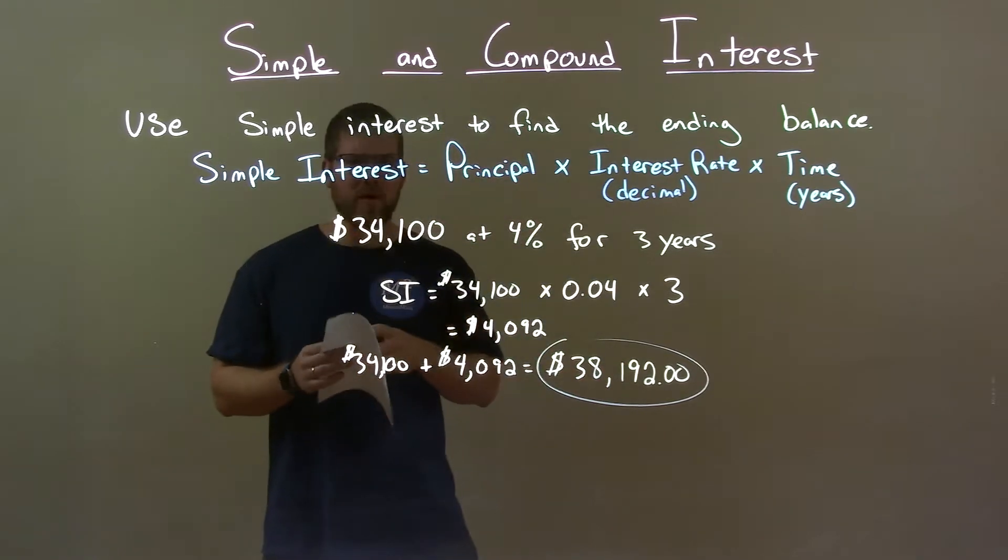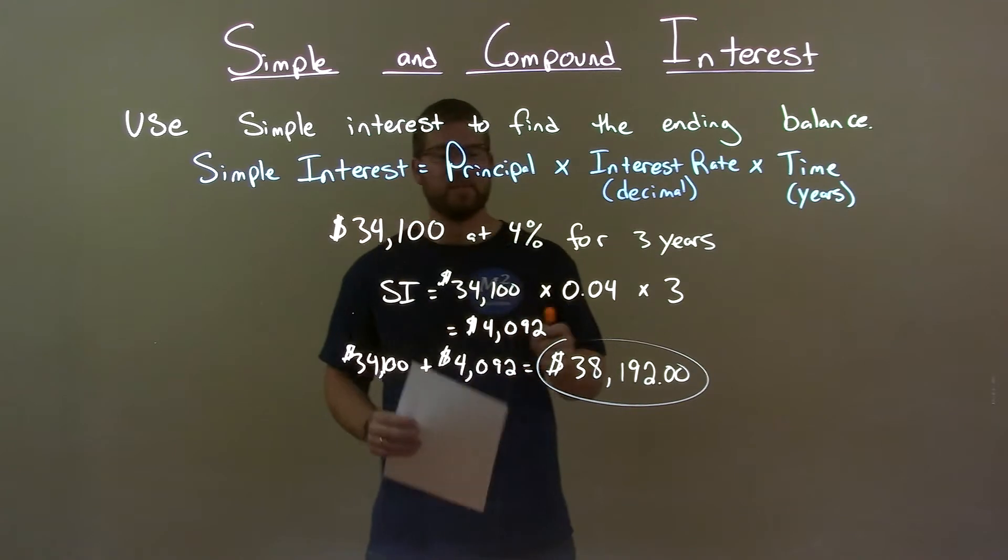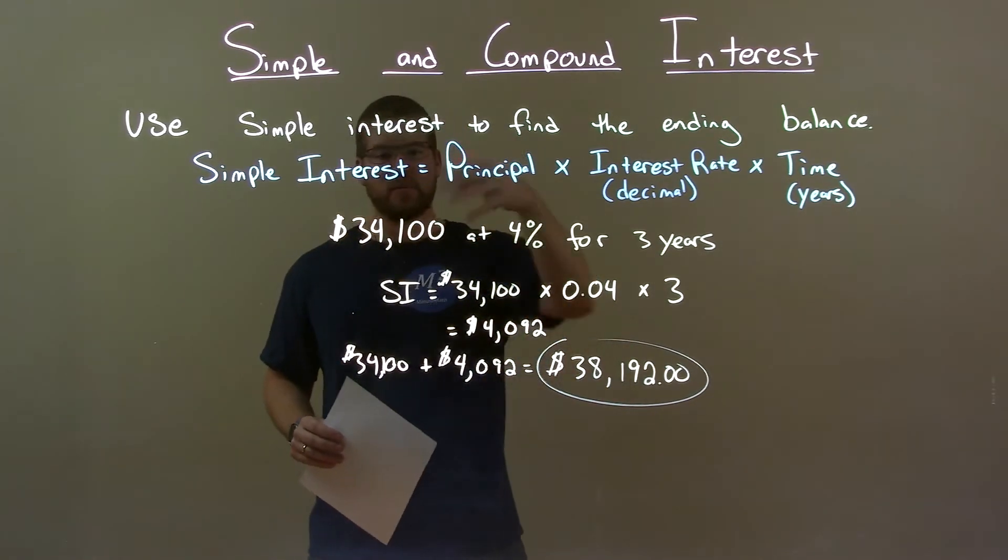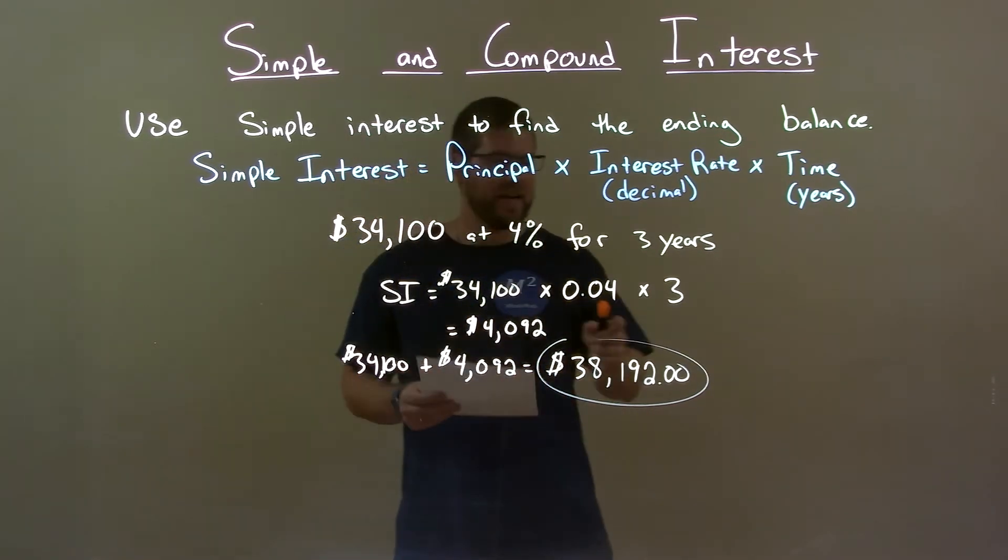Quick recap. We're given $34,100 at 4% for 3 years and we're applying simple interest. I used the formula provided and added that simple interest back to my initial principal and got a final answer of $38,192.